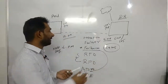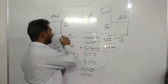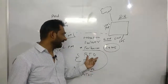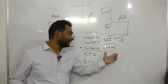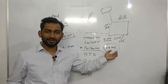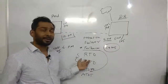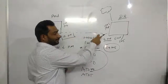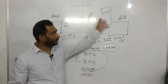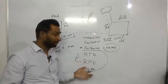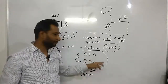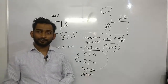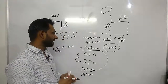RTO — Recovery Time Objective — means, for example, if a disaster happens at 12 p.m. and recovery is completed at 4 p.m., the RTO was four hours. If your RTO is set to one hour, you need to make sure all systems are live and up at the DR site within that one hour for users to use.